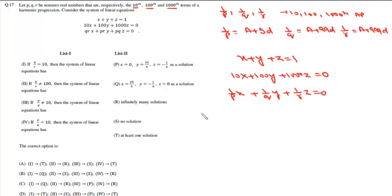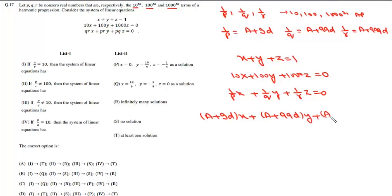Substituting 1/P = A + 9d, 1/Q = A + 99d, and 1/R = A + 999d into the third equation, we get (A + 9d)X + (A + 99d)Y + (A + 999d)Z = 0.